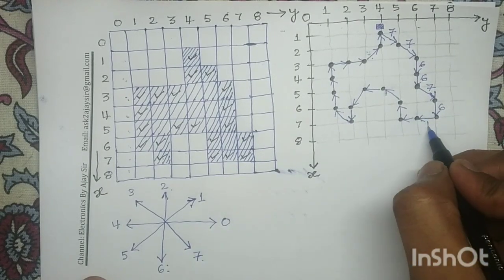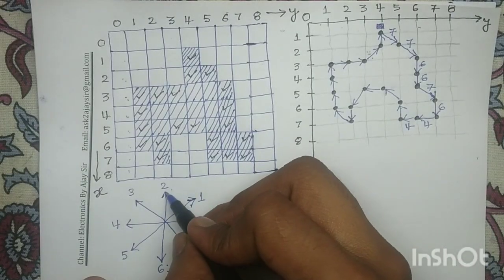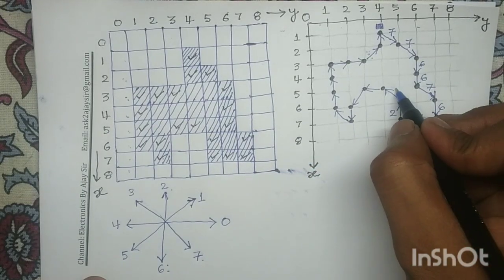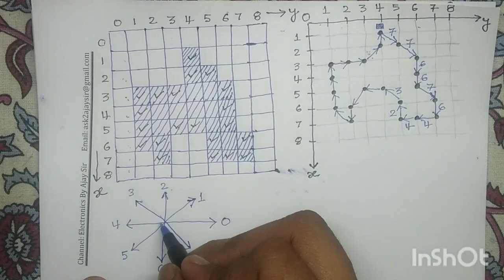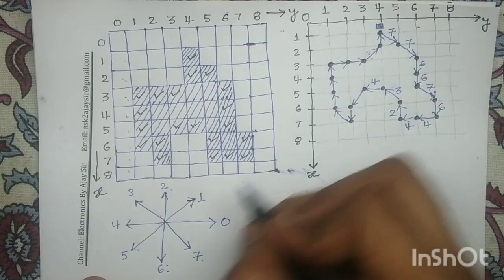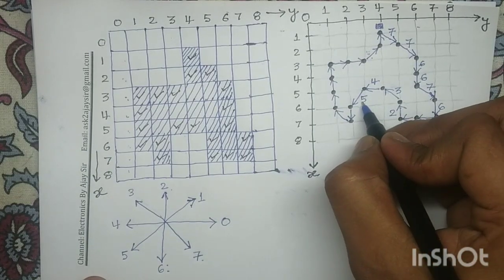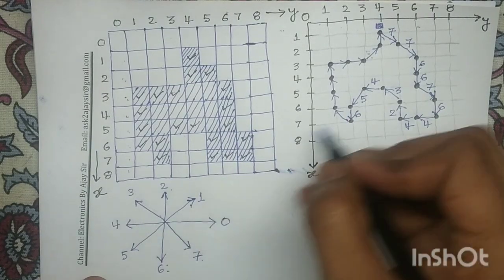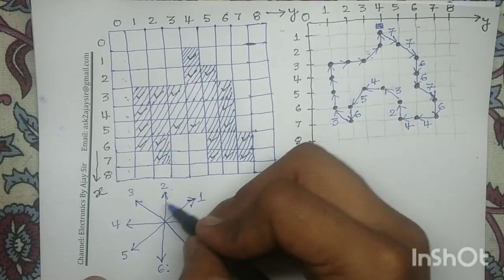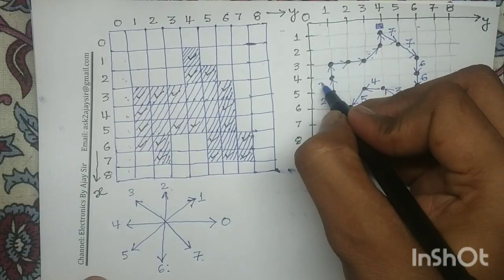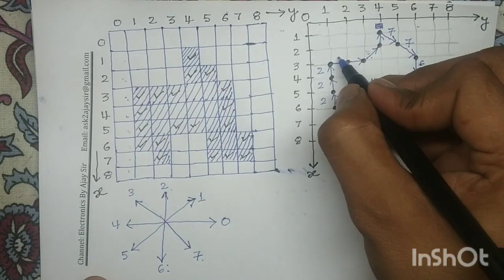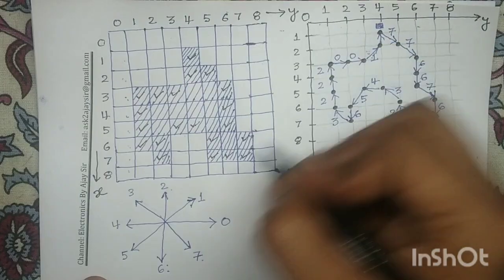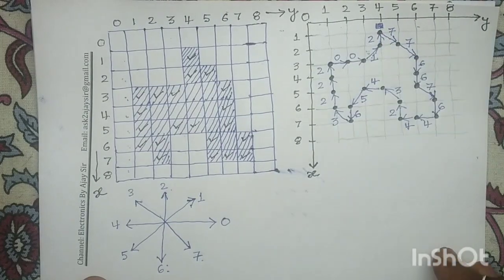This reverse arrow has the directional code 4, so I will write here 4. Here also I will write 4. This arrow has the directional code 2, so I will write here 2. This arrow in 8-directional chain code has directional code 3, so I will write here 3. This reverse arrow has directional code 4, so I will write here 4. Now this arrow has directional code 5, so I will write here 5. This down arrow has directional code 6, so I will write here 6. Again this arrow has directional code 3, so I will write here 3. Now this up arrow has directional code 2, so I will write here 2, 2, and 2. This forward arrow has directional code 0, so I will write here 0, and here also 0. Now this arrow has directional code 1, so I will write here 1. Finally this up arrow has directional code 2, so I will write here 2.